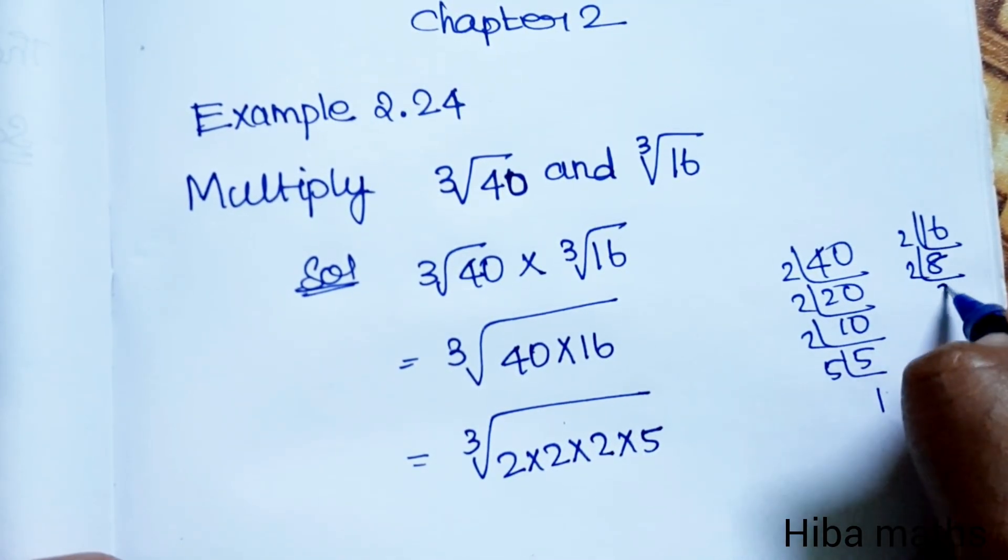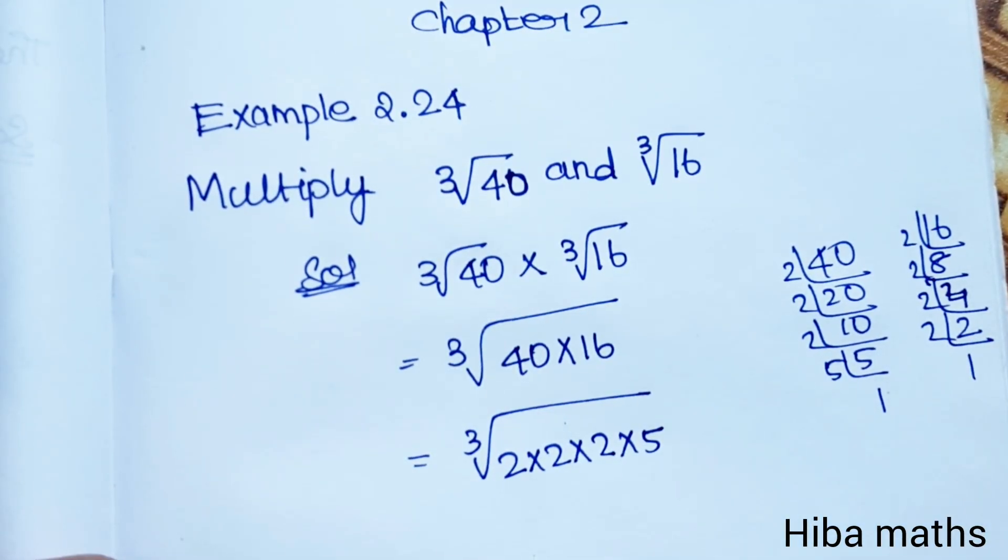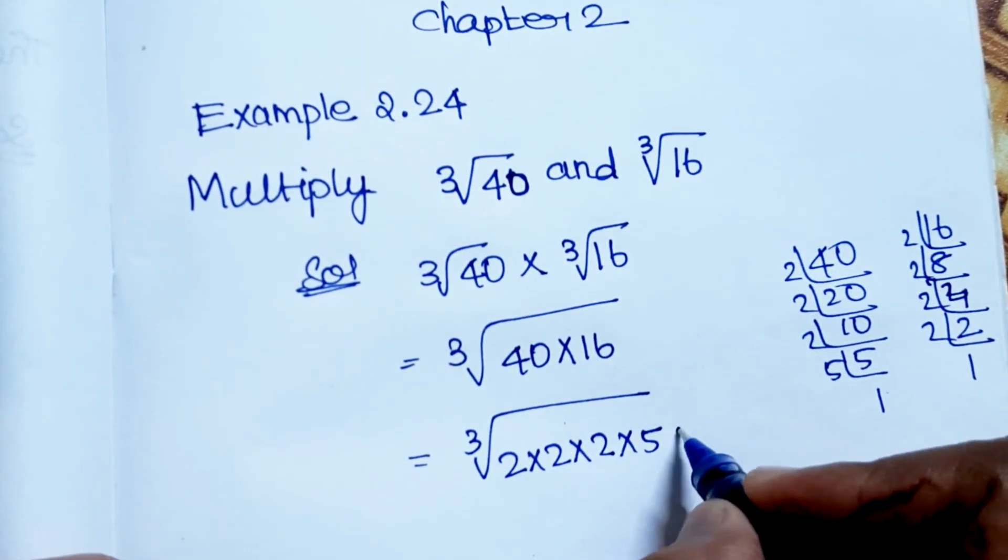Now 16: 2 times 8 is 16, 2 times 4 is 8, 2 times 2 is 4. So 16 equals 2 into 2 into 2 into 2.